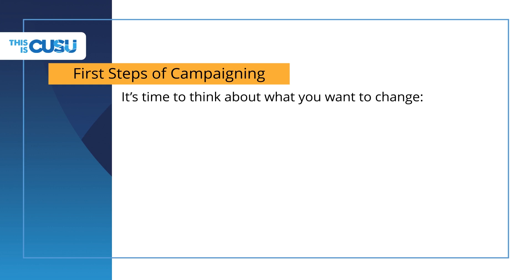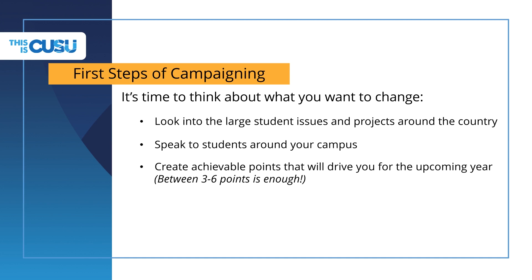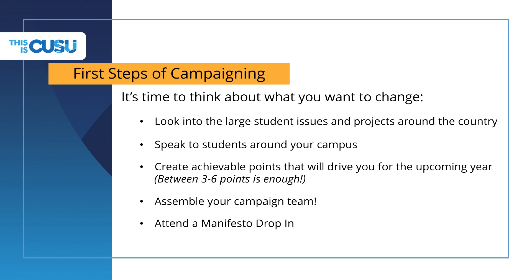Now we've dealt with the rules and numbers, let's move on to campaigning. If you haven't already, it's definitely time to think about what you want to do for your year in office. If you're short of ideas, you can look into the largest student issues in the country, or speak to students on campus, your friends or colleagues, to find more local issues that need work. One of the most important things is to find three to six points that will really drive you for the upcoming year. Be aware that if you're elected on those points, you have to work for them for a year, so make sure you're genuinely interested. Also think about what your campaign team looks like — pick people that you trust, as you will be responsible for them.